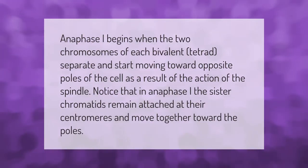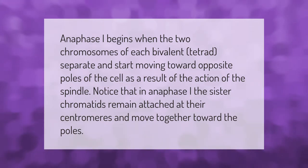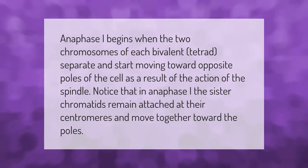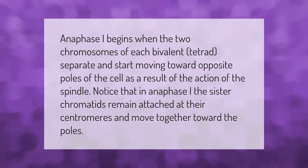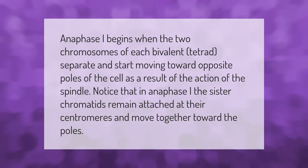Anaphase I begins when the two chromosomes of each bivalent tetrad separate and start moving toward opposite poles of the cell, as a result of the action of the spindle. Notice that in anaphase I, the sister chromatids remain attached at their centromeres and move together toward the poles.